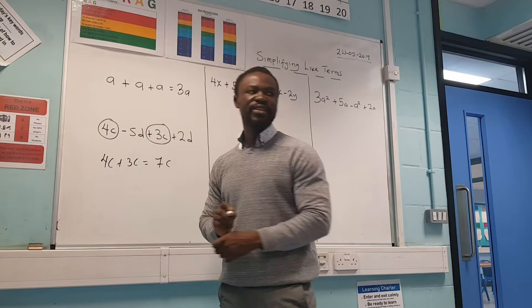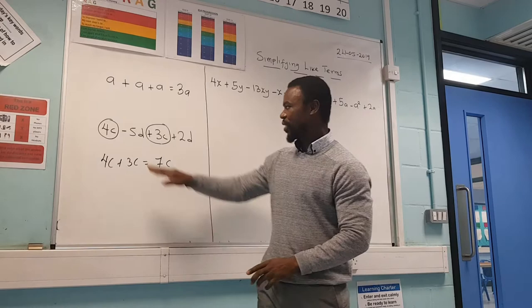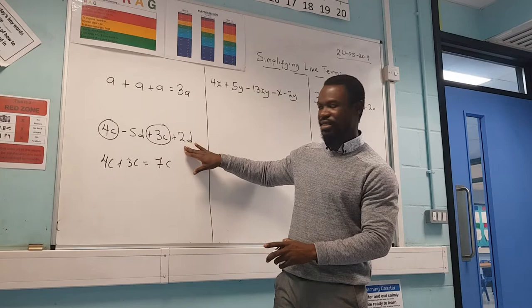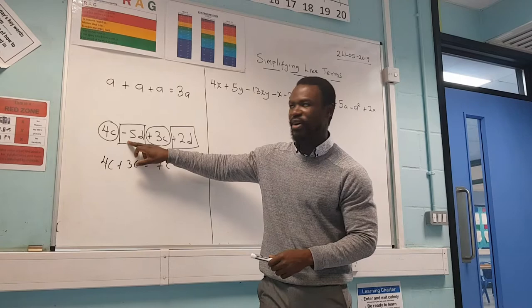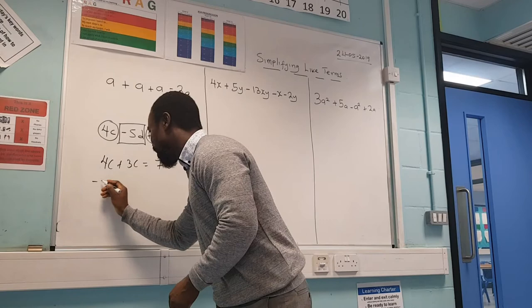I've finished with the C. Now I go and find another different letter — here the letter is D. I need to find another letter that is D, which is this one here. I'll put that in a box so we can see the difference. So my letters in the box give me minus 5D plus 2D, which I can do separately.